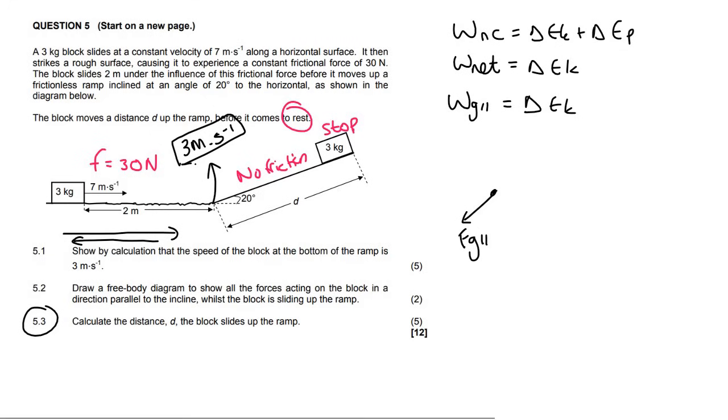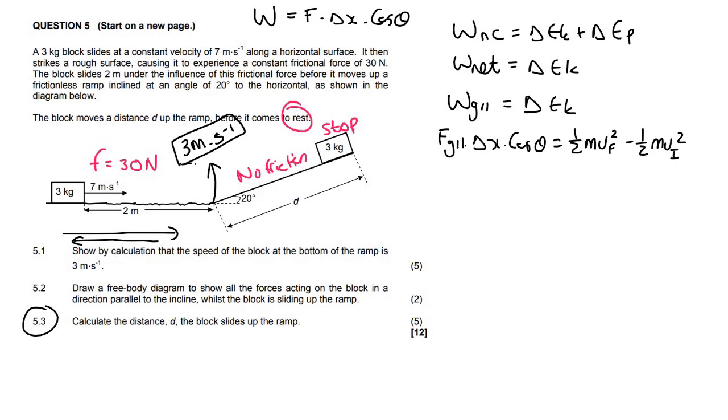W_NET, the only forces we're going to really consider would be parallel. So we're going to say W gravity parallel is equal to change in EK. Remember that the formula for work is F delta X cos theta. So that's going to give us FG parallel delta X cos theta equals to a half MV squared final minus half MV initial squared. FG parallel is MG sin of theta. So that's going to give us 3 multiplied by 9.8 multiplied by the sin of the angle 20. That's FG parallel. Now the distance of the slope is D. If you're moving up the slope, parallel gravity is acting down the slope, so that's 180. So you'll take cos 180 equals to a half.